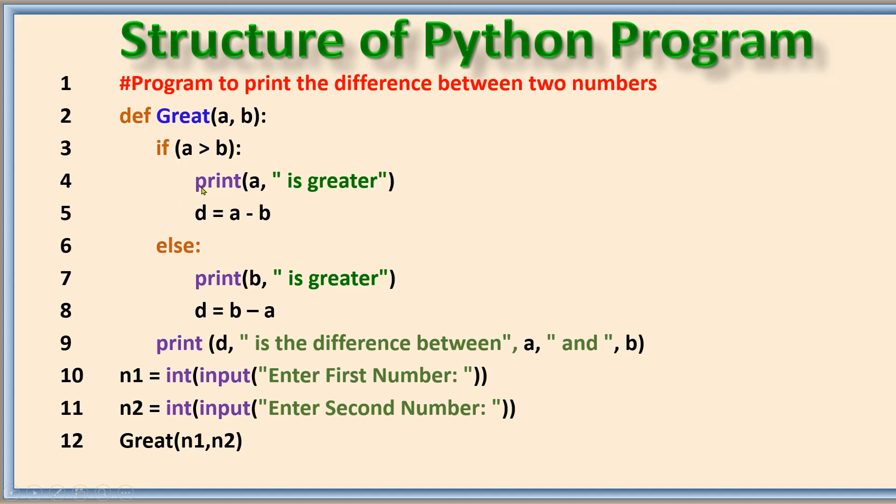Now if you see, many instructions are made together to make one simple program. The instruction that computer language can execute are called statements. For example, this line prints, this line evaluates and stores. Similarly, any action is taken place, then it is called a statement. But it is not necessary that every statement results in a value.